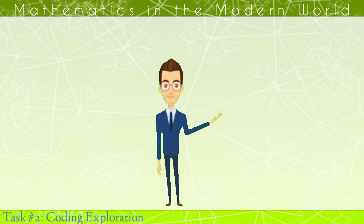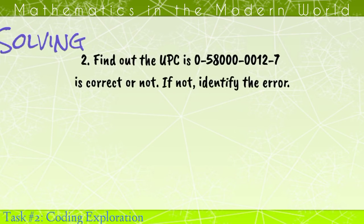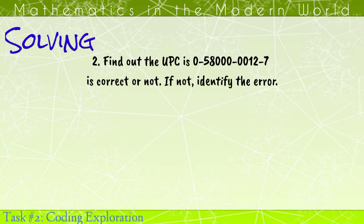Now, we are going to solve the UPC barcode whether it is valid or not. Find out if the UPC 0-5-8-0-0-0-0-0-1-2-7 is correct or not. If not, identify the error.